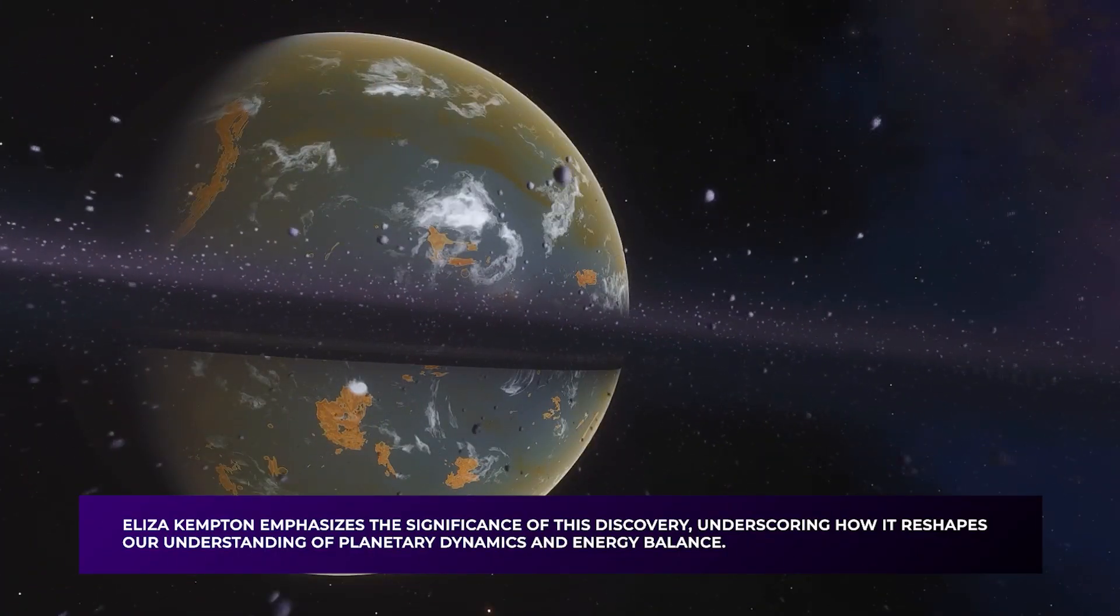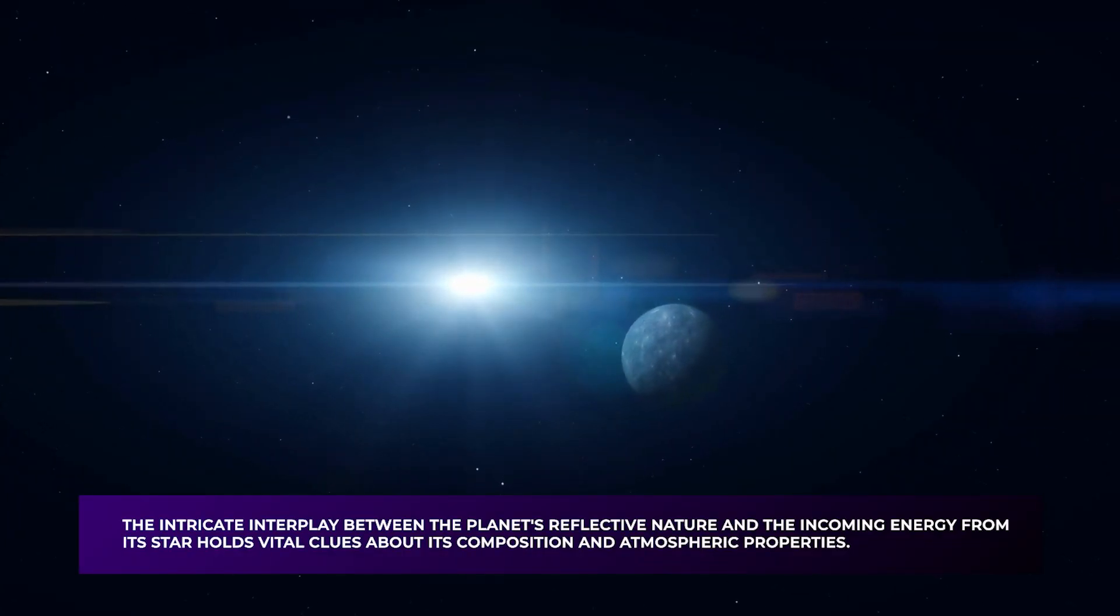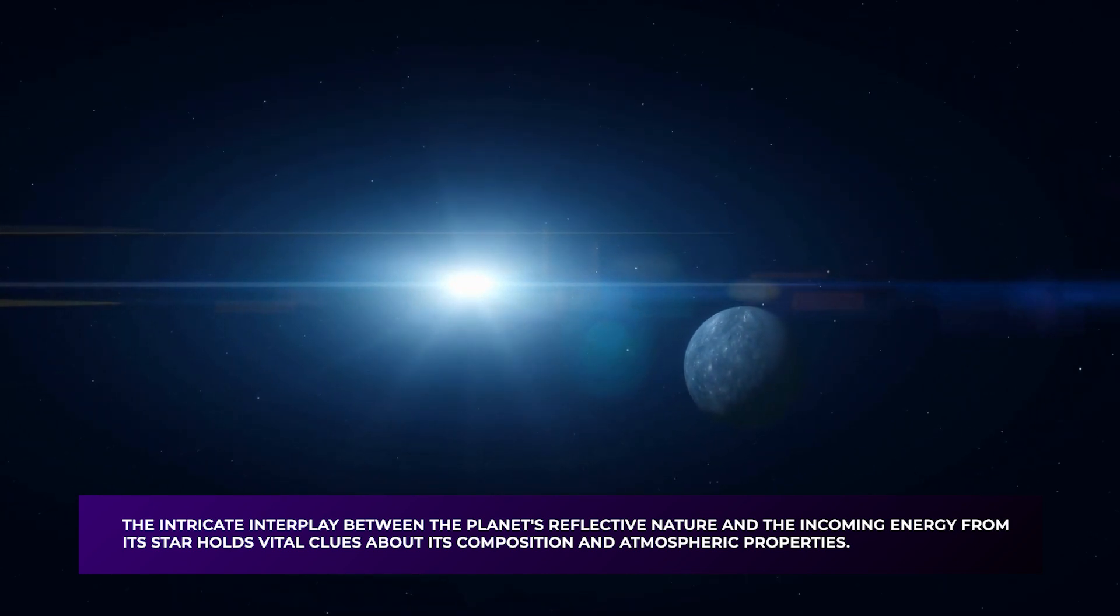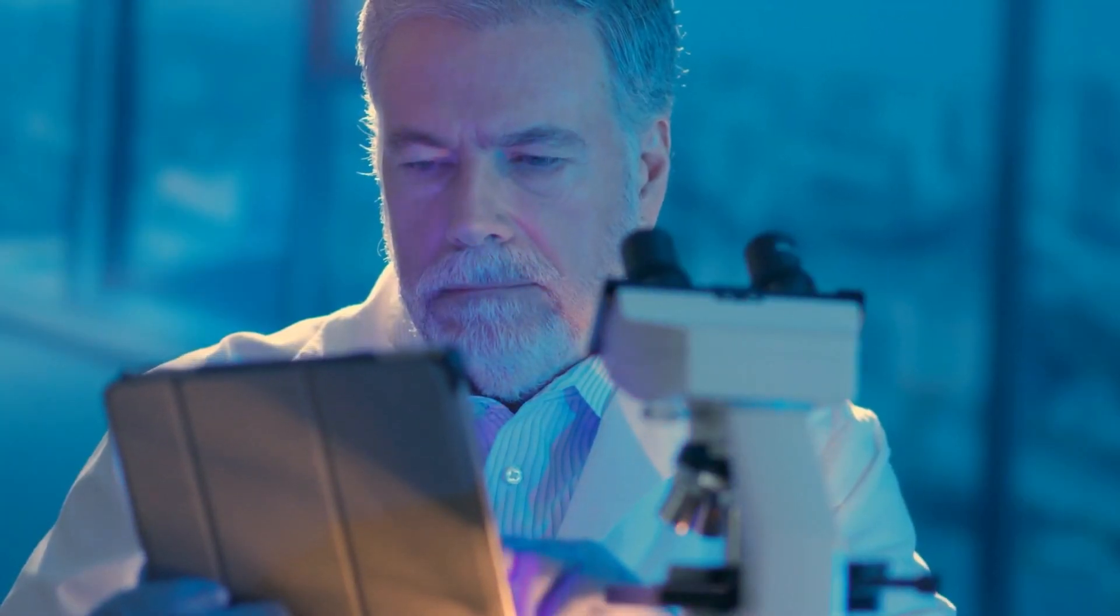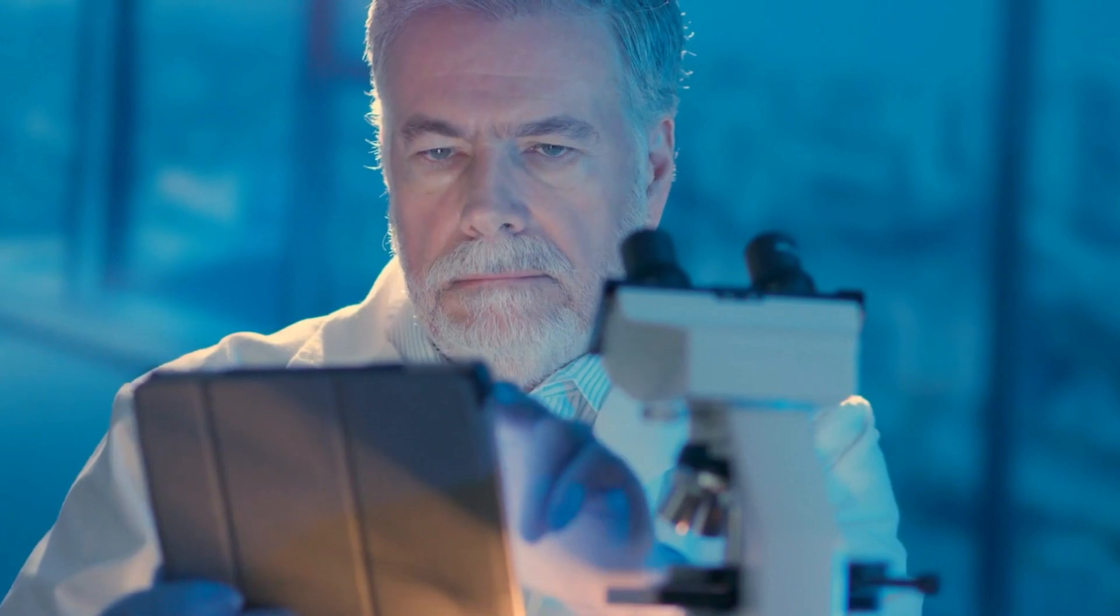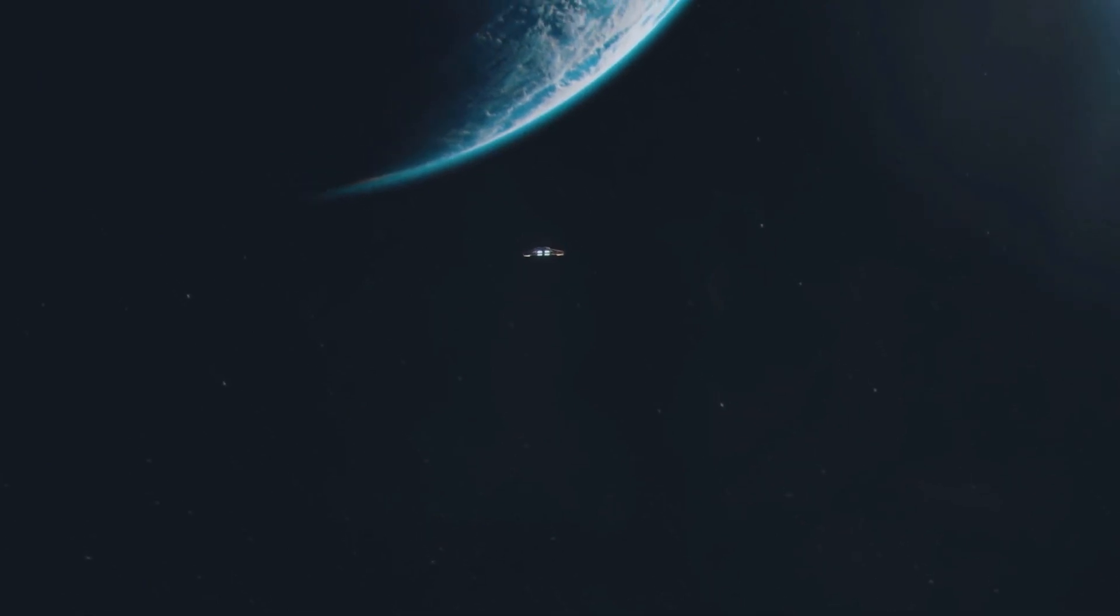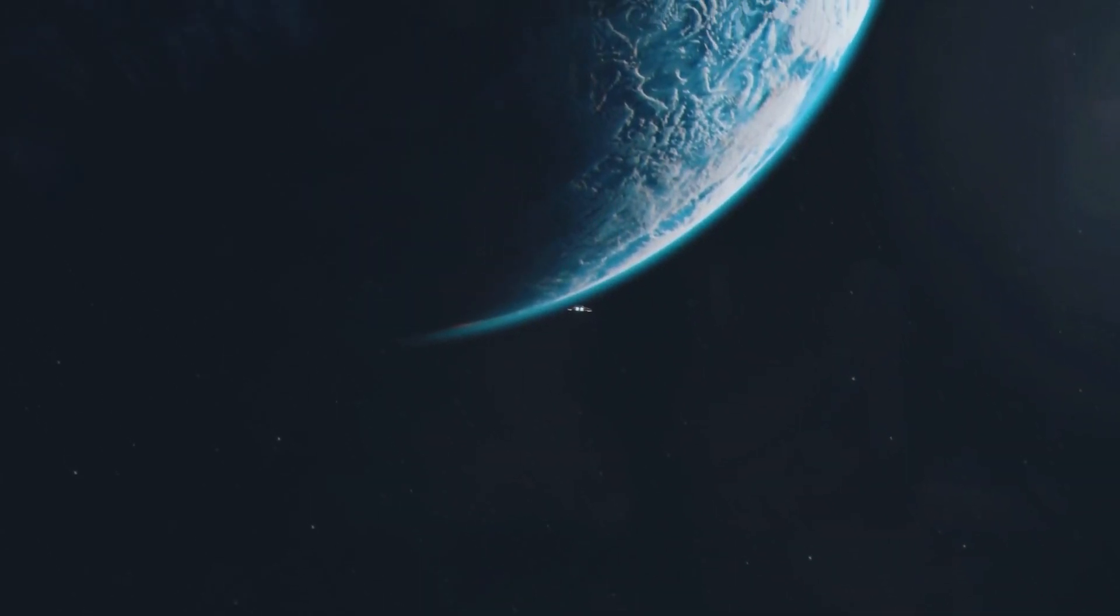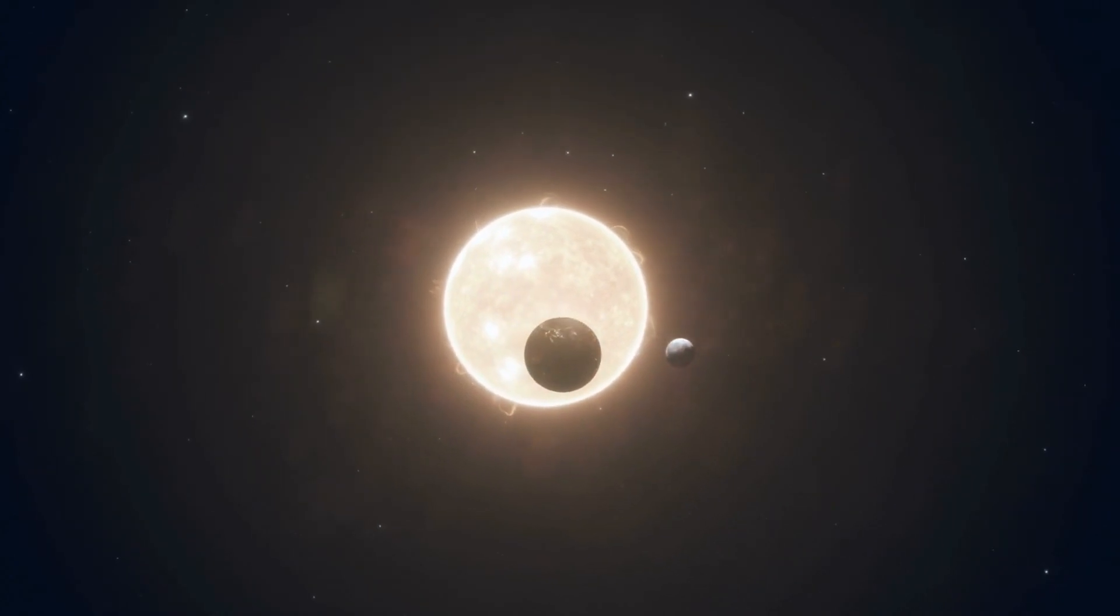Eliza Kempton emphasizes the significance of this discovery, underscoring how it reshapes our understanding of planetary dynamics and energy balance. The intricate interplay between the planet's reflective nature and the incoming energy from its star holds vital clues about its composition and atmospheric properties. As scientists delve into the complexities of GJ-1214b's thermal characteristics, they uncover a captivating tapestry of planetary physics. The intricate dance between temperature variations and reflective capabilities paints a vivid picture of this mysterious world. Such revelations propel us closer to unraveling the enigma of GJ-1214b and deepening our knowledge of the diverse celestial bodies beyond our solar system.